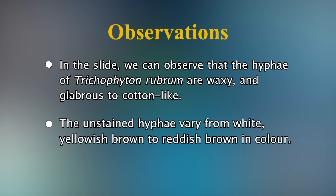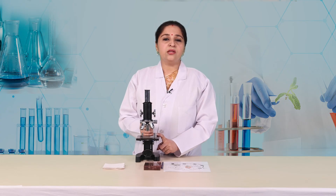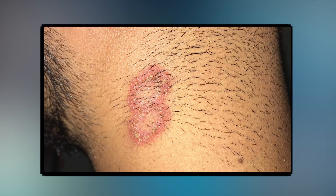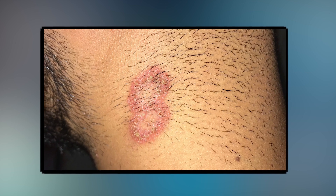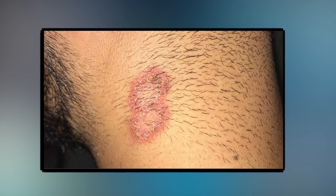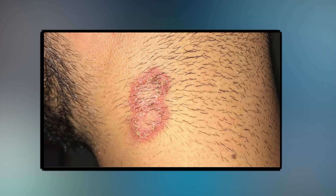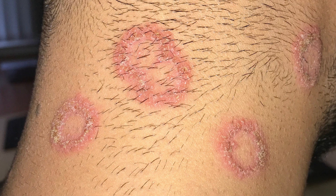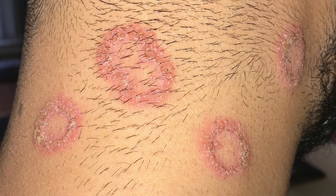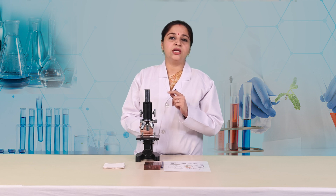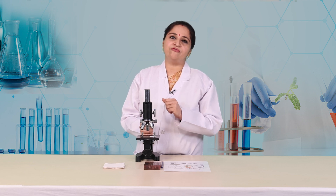The unstained hyphae vary from white, yellowish brown to reddish brown in color. Ringworm is a contagious fungal infection of the skin. The infected area of the skin is itchy, red, and raised with scaly patches with sharply defined edges. It is redder on the periphery than in the center, creating a ring-like appearance. Therefore, it is commonly called ringworm fungus.